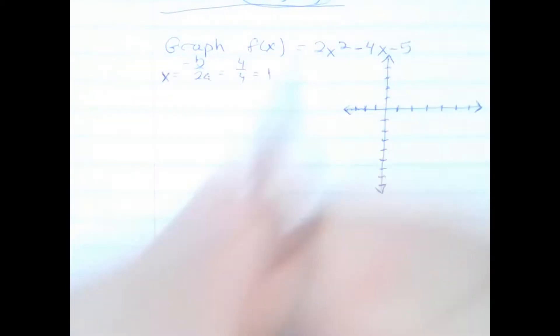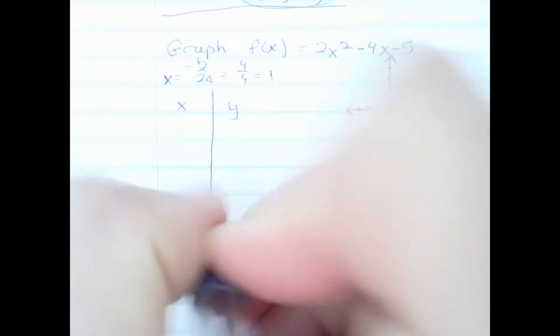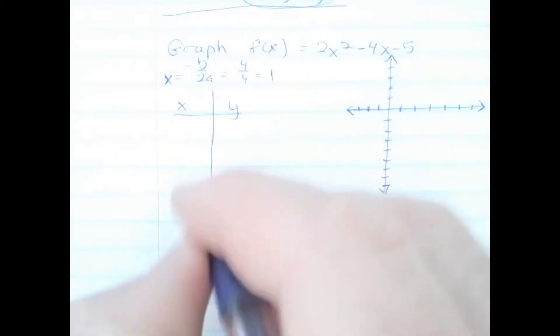Negative b is 4, 2 times the a number is 4, so I know the x-value of the vertex is 1. I'm going to use that to help construct my x-y chart so I can get 5 solid values from which to make the graph.